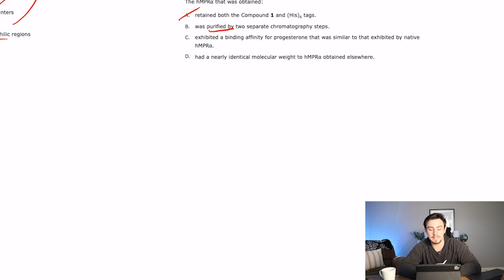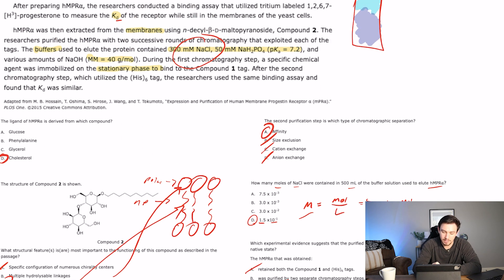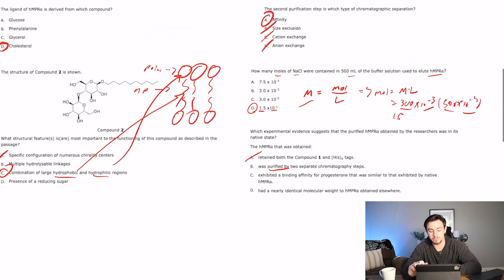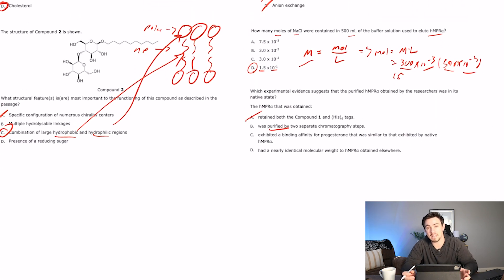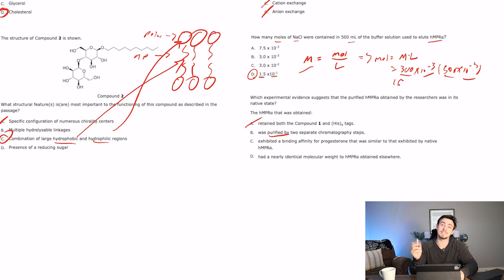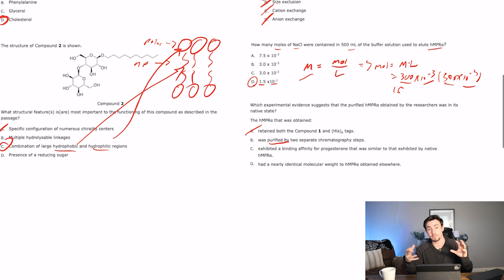Let's see if there's something better. C says it exhibited a binding affinity for progesterone that was similar to that exhibited by native HMPR-alpha. I didn't really talk about it, but that is kind of what we said here. It said that we had the same binding assay and found that KD or the binding affinity was similar. So to me, that's a pretty good indicator that something is the same molecule. Is if we have it, we think it's HMPR-alpha, and we see that its KD is 5. Let's say we think its KD is 5. And then we run it through these tests to make sure that it's HMPR-alpha. And we see that its KD is still 5, after we're confident that it is HMPR-alpha.